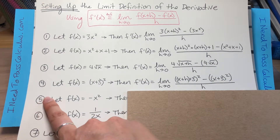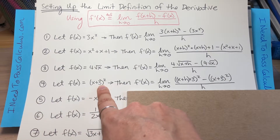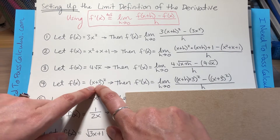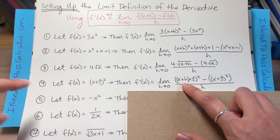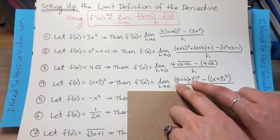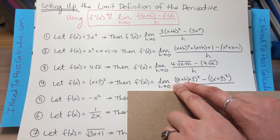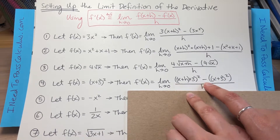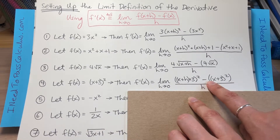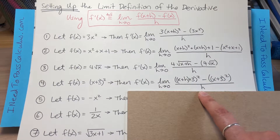For problem four, we have f(x) = (x + 3)². Again, exactly where we had the x originally in the function, in this f(x + h) that we start our numerator with, we have to put (x + h) instead of x. So we have (x + h + 3) all being squared. Then you finish off the numerator with subtracting a perfect copy of the original function, all divided by h.